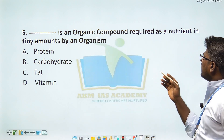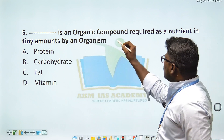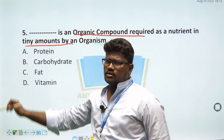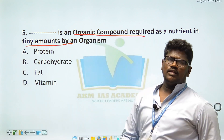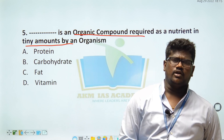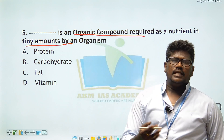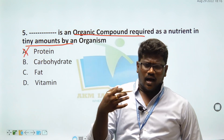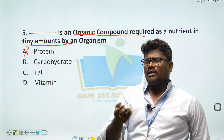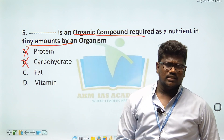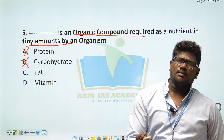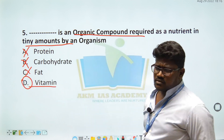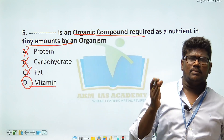Dash is an organic compound required as a nutrient in tiny amounts by an organism. Option D is the right answer: vitamin. Examples of sources include meat, fat, and chicken providing at least 100 grams.